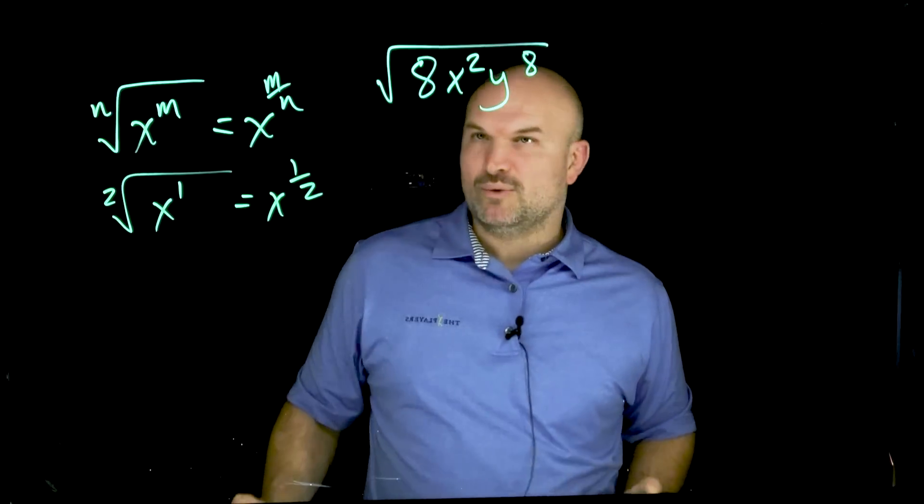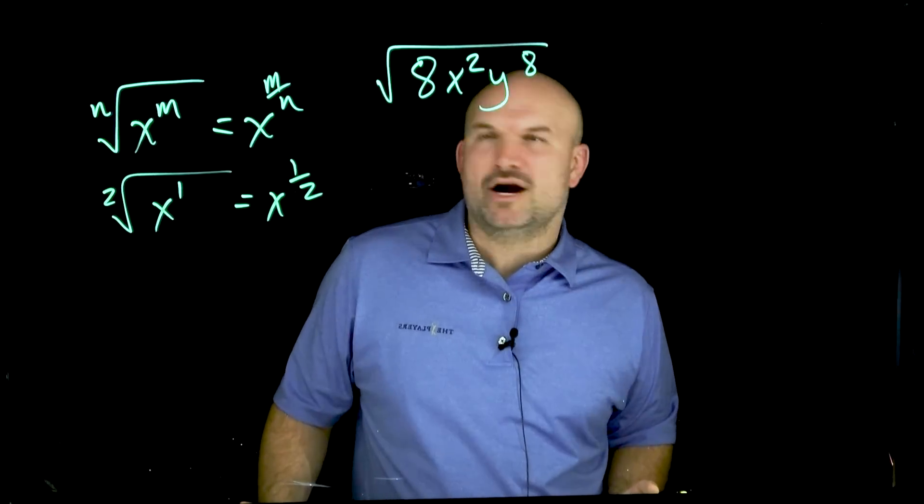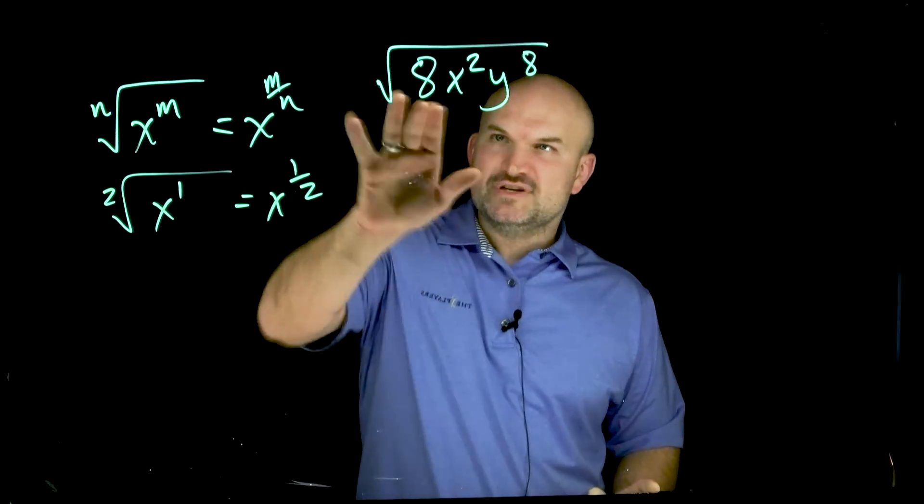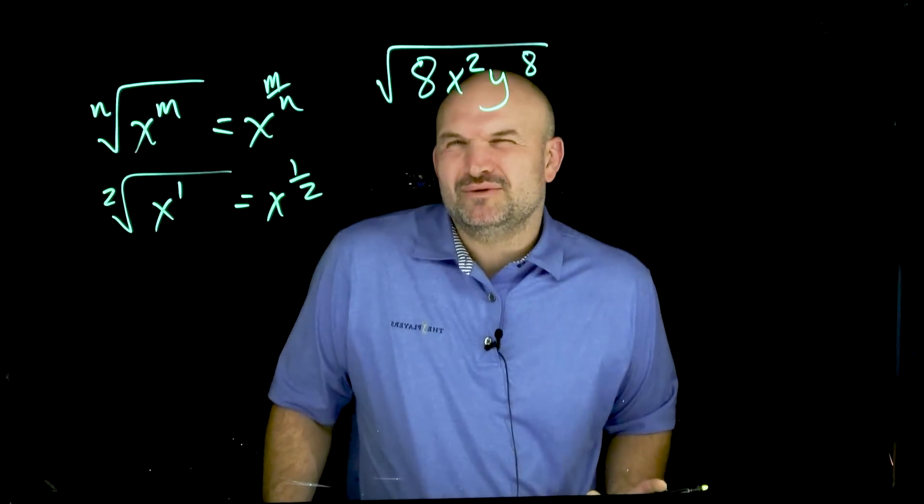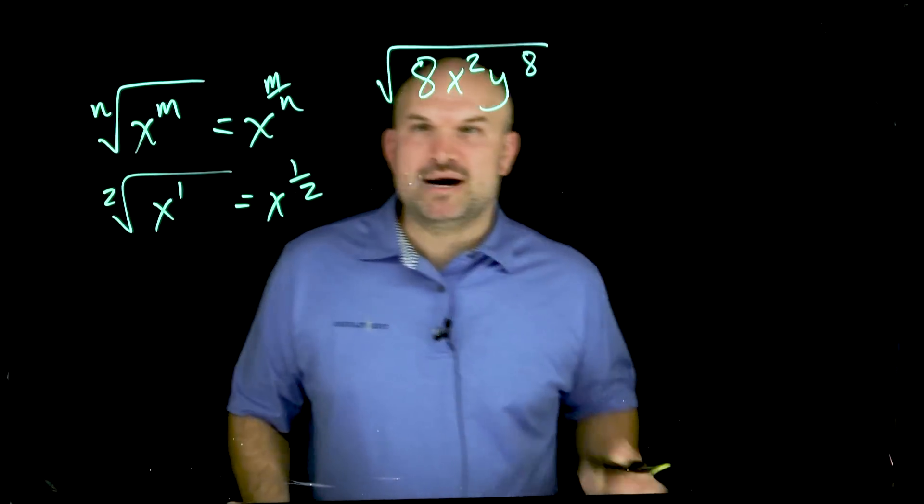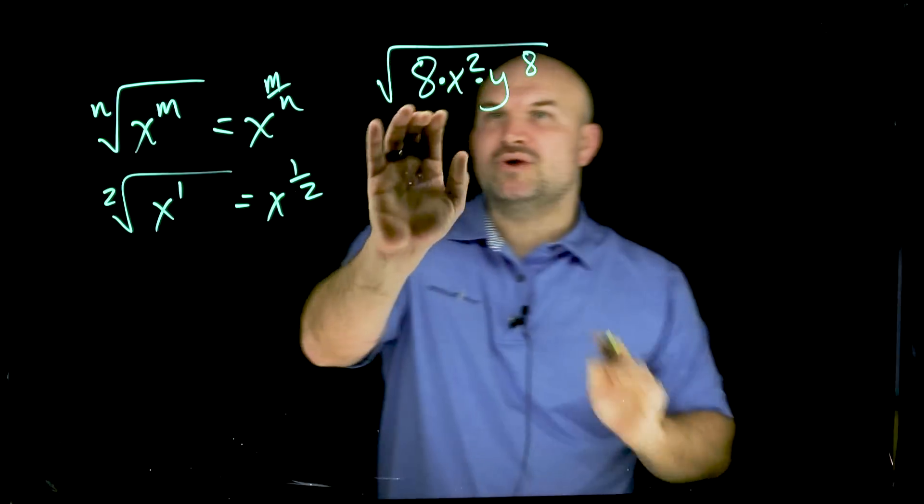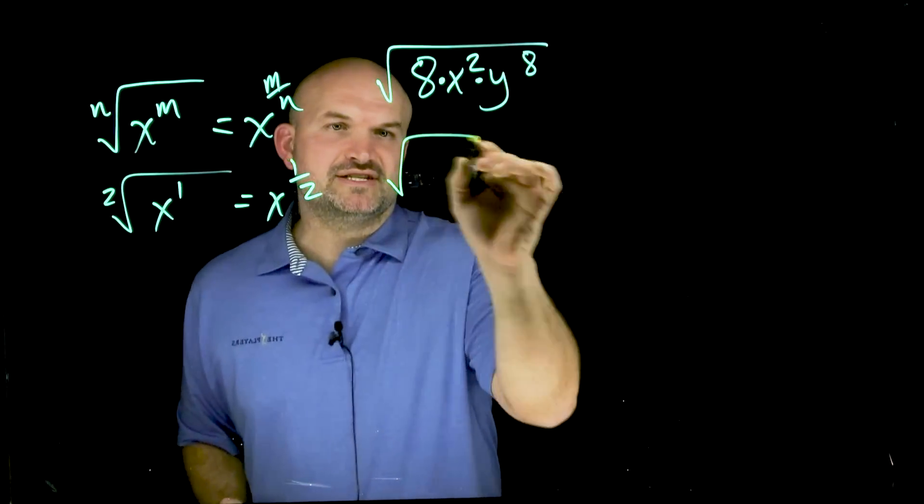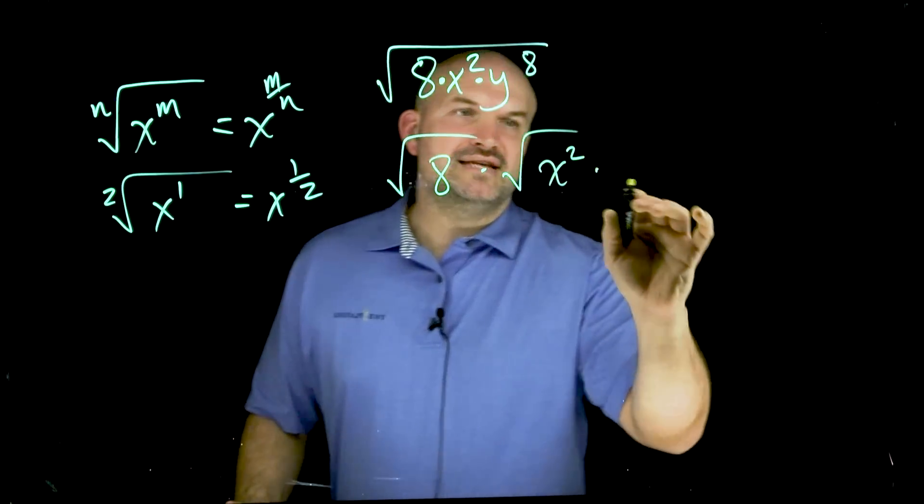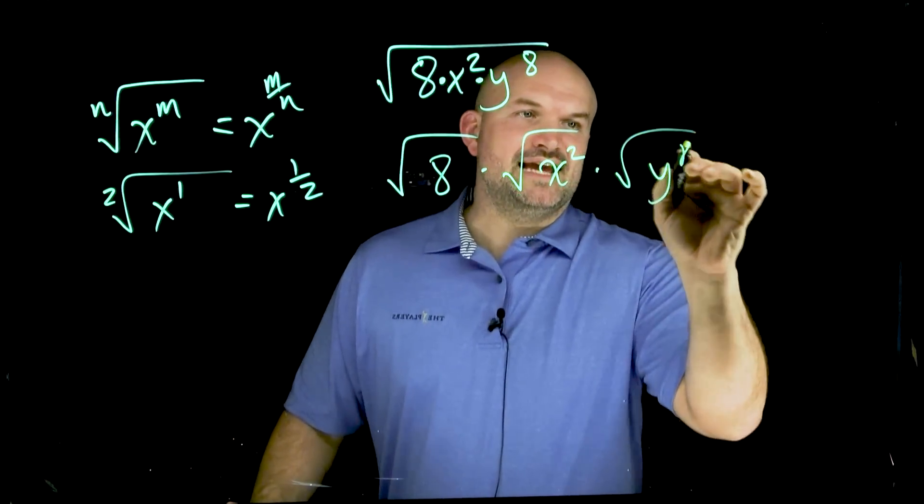So in this case, we could go ahead and rewrite everything to the one half power, but not always is it going to be the easiest case. Like for instance, if I was going to deal with the square root of 8, I don't really want to deal with 8 raised to the one half power. I'm just going to go ahead and first break up this radical into the product of each of my terms. So I have this as the square root of 8 times the square root of x squared times the square root of y to the eighth.